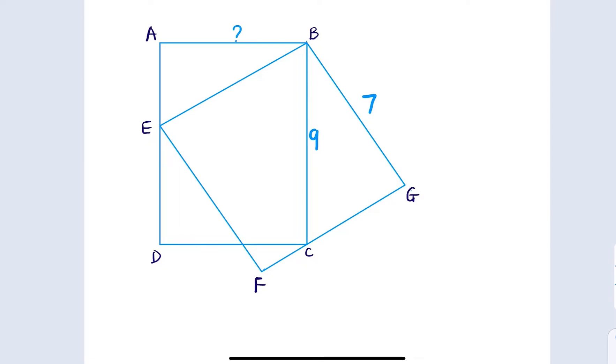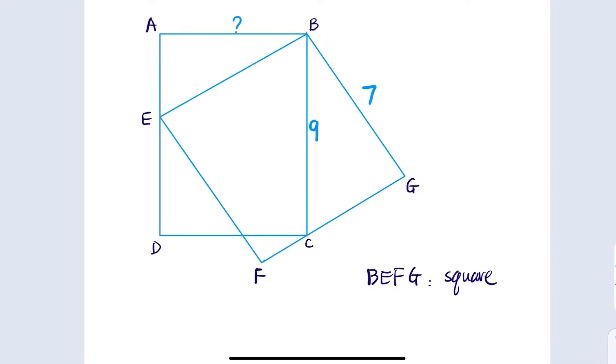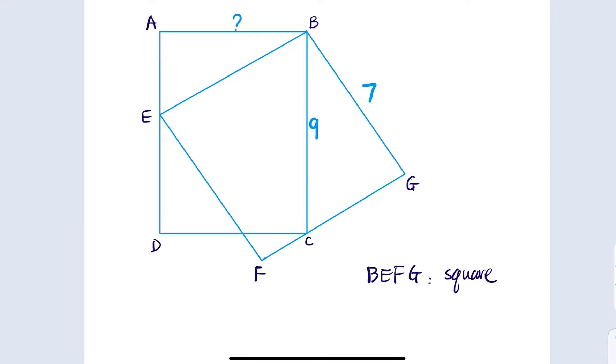Here we're given a square and rectangle with sizes seven and nine. The seven is the side of square BEFG, and the rectangle ABCD, we try to find the size AB given that BC is nine.